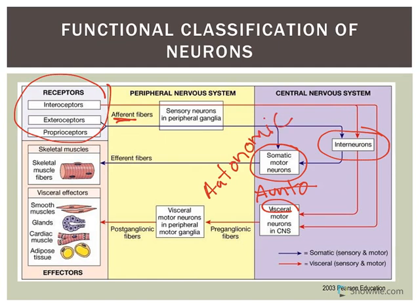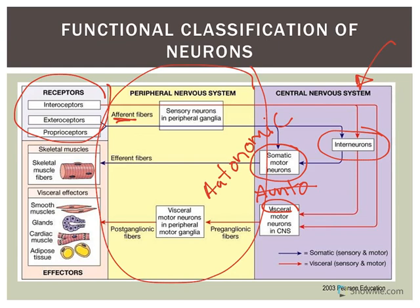The peripheral nervous system contains those afferent and efferent neurons. The effectors respond to signals, and sensory receptors are part of the sensory division. The central nervous system interprets and integrates various information. This is going to be the end of looking at the overall structure and classification of neurons. The next recording will look at the role of myelin and also what can happen if there is demyelination.